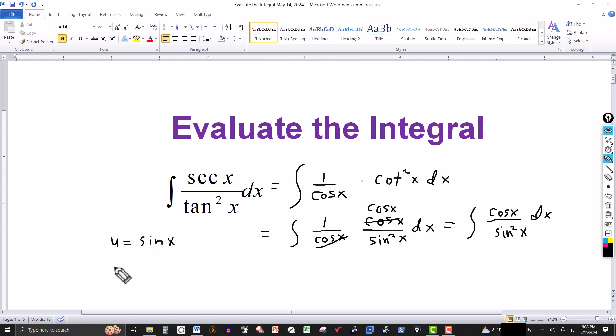And du, taking the derivative of both sides, on the left side I'll have du, the derivative of sine is cosine, so this would be cosine of x, and then I would have the dx.